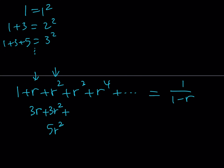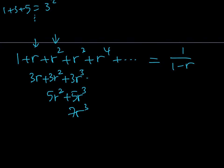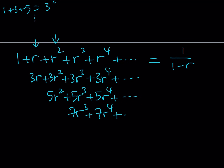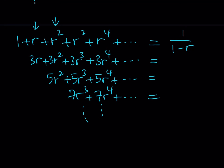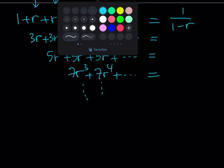Now let's continue. I want to get 16r cubed. To get 16r cubed I should be adding 3r cubed, then 5r cubed, but that's not enough — I also need 7r cubed. So this tells us that we're going to be stacking up all these series with odd number coefficients and adding them up. This is going to go on forever, and at the end we're going to add those expressions. That's basically what I have on the left hand side. But how do I find each of these sums?